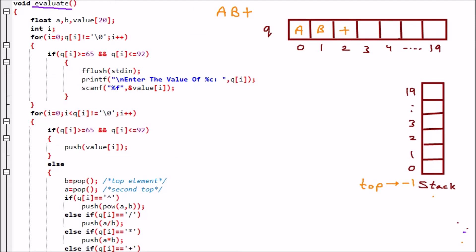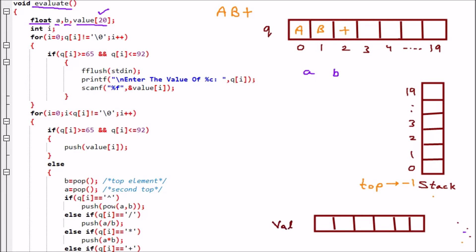Inside the evaluate function we have a few variables: float a, b, and value[20] — a float array of size 20 named value, with indices 0 through 19. Then we declare int i, which is for running the for loop.